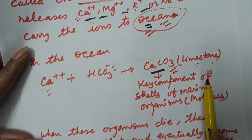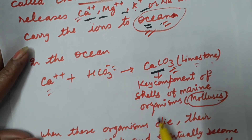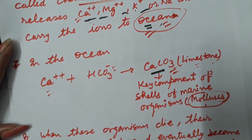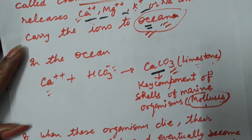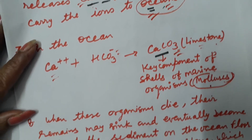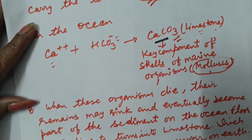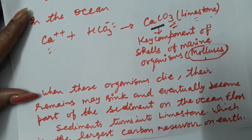Limestone is a key component of the shells of marine organisms. Inside the water, molluscs — which are marine organisms — utilize this limestone in the preparation of their shells, like conch shells and sea shells. When these marine organisms die, their shells sink down to the bottom and form sediments. The bottom of the ocean is the largest reservoir of carbon in nature.